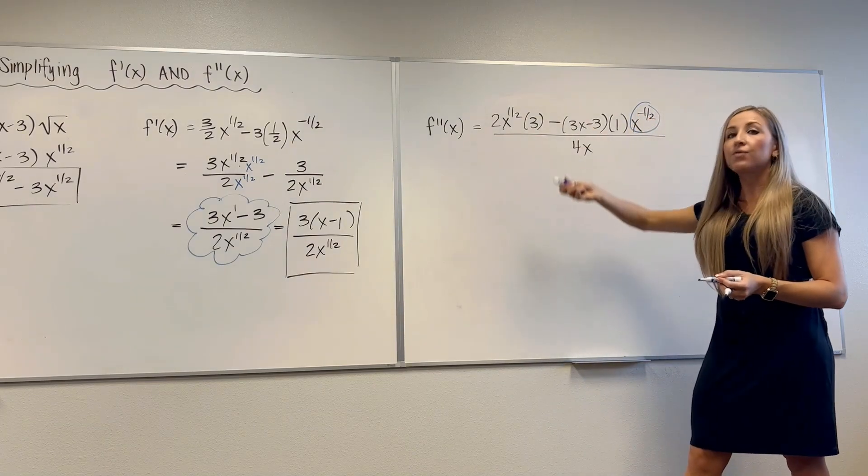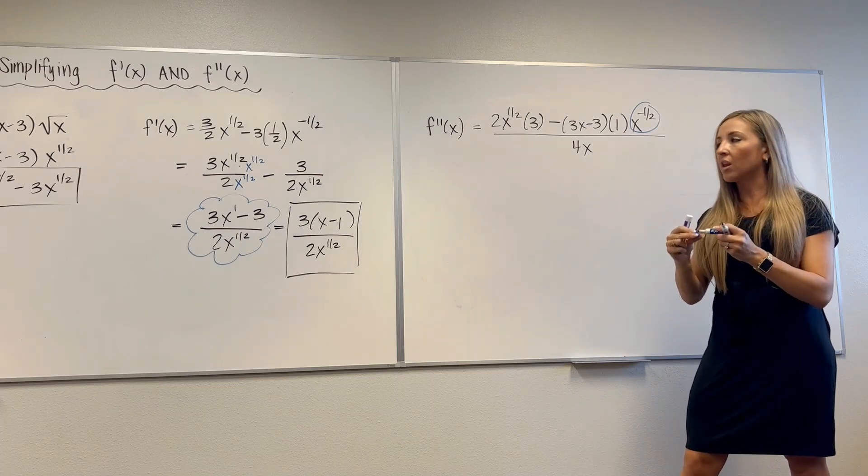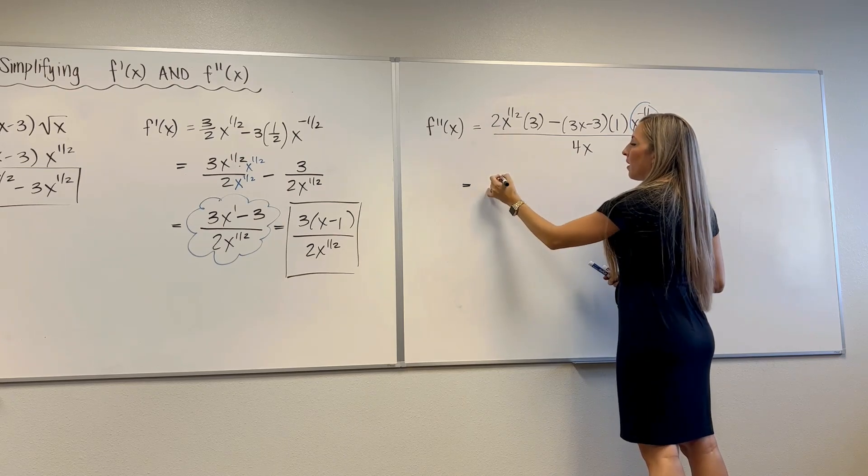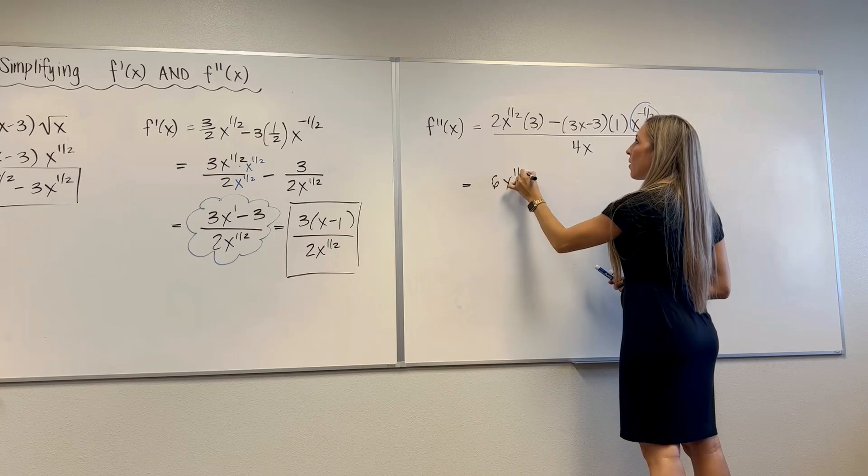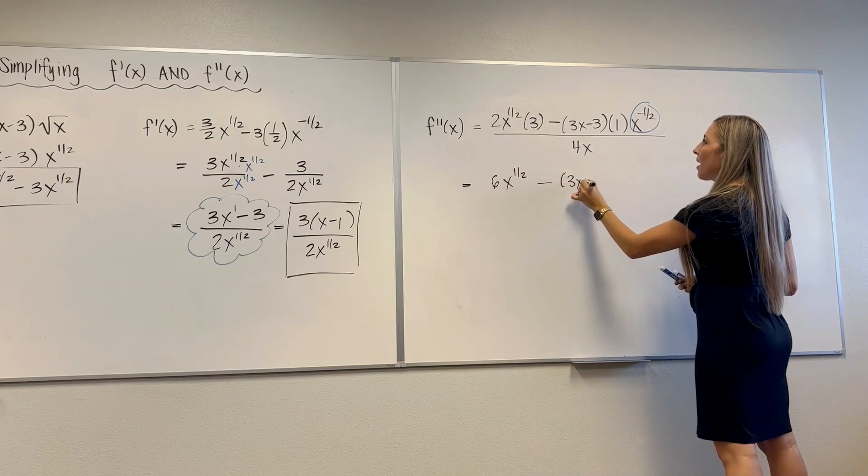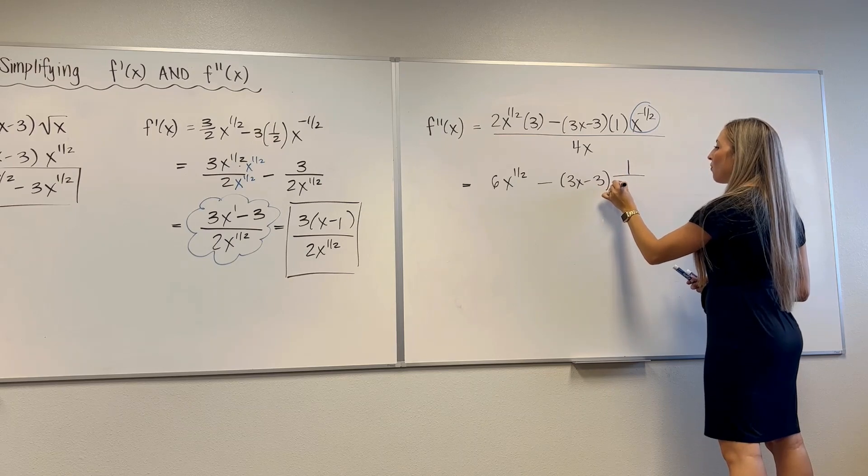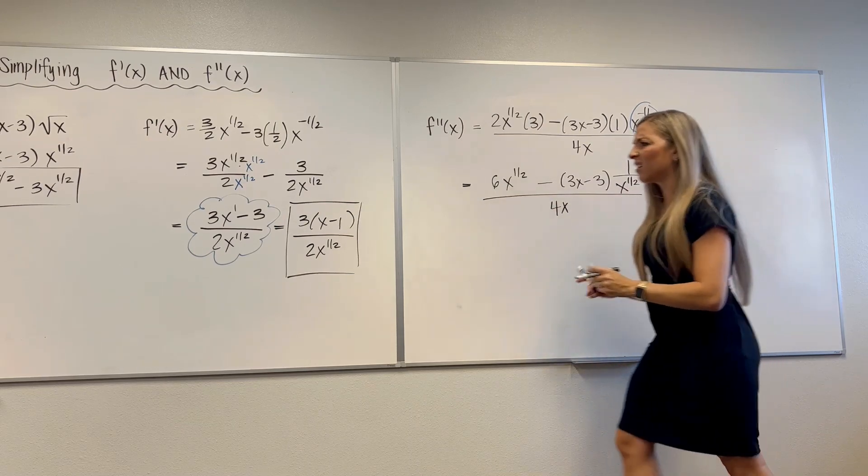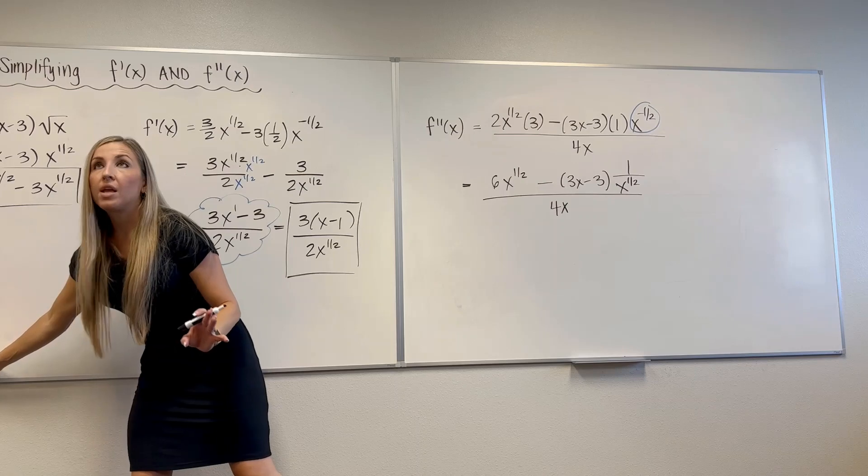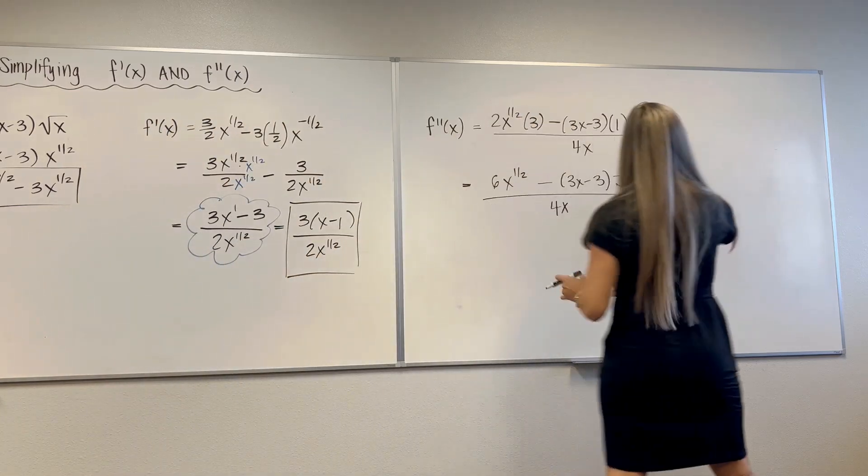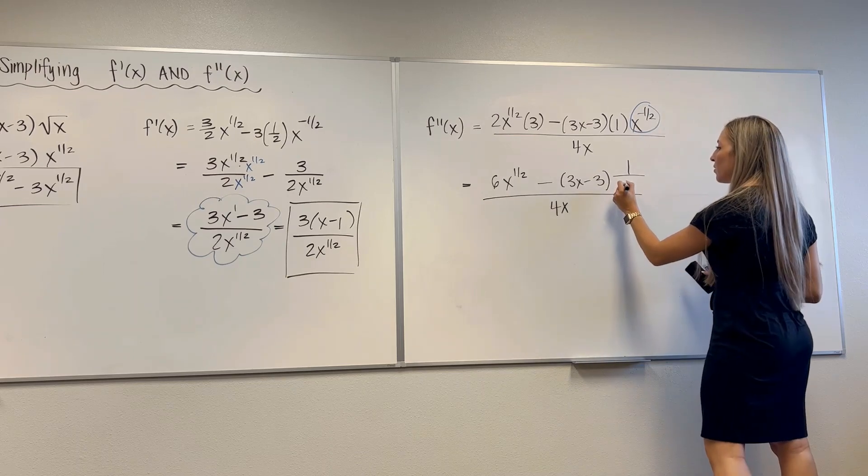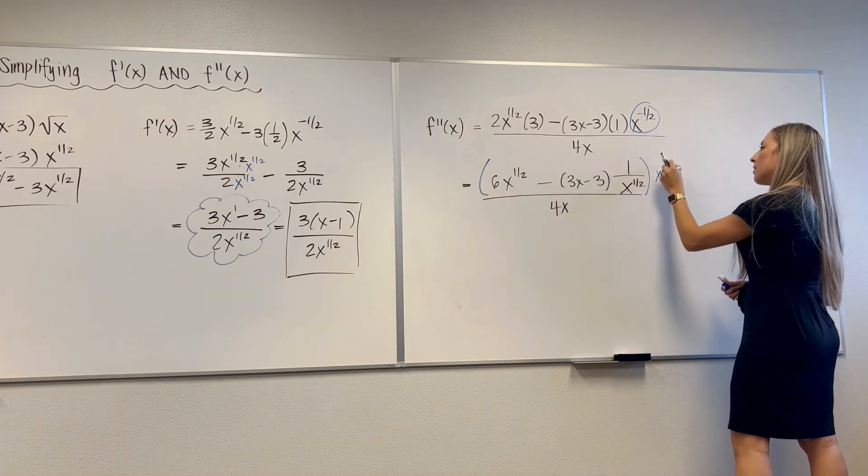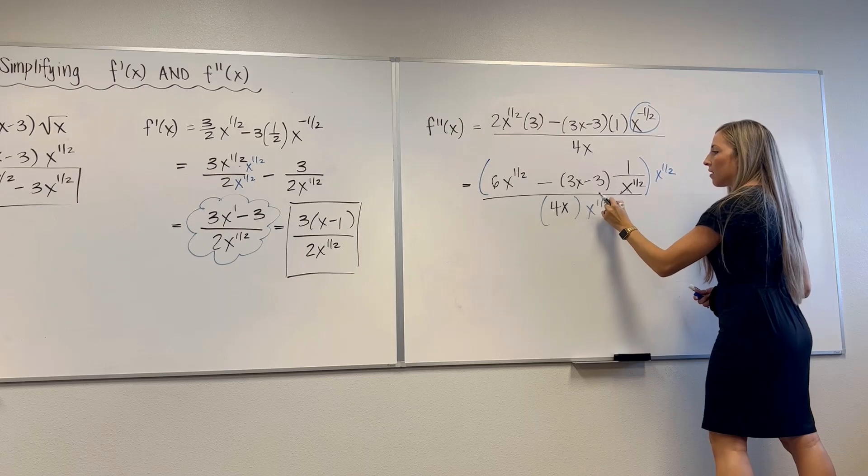So technically we have a complex fraction at this point because we have a fraction within a fraction. So usually students like thinking of it that way better. So let me help you clean it up that way. So we've got this is 6x to the 1 half minus 3x minus 3. And I'm going to write 1 over x to the 1 half all over 4x. This ugly little x, let's fix him. So to simplify the complex fraction, I'm going to multiply through by x to the 1 half, because you don't want that extra denominator in there. So everybody gets multiplied by x to the 1 half.